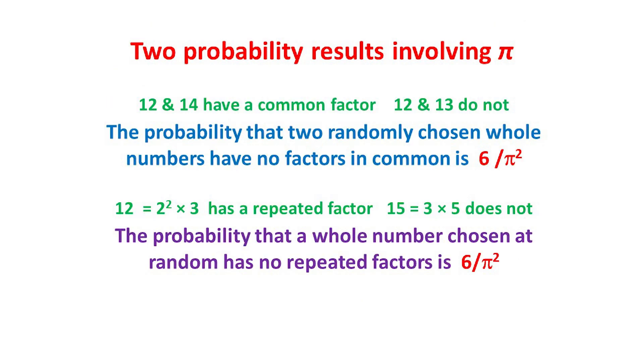Indeed, as we've already seen, the number pi turns up in unexpected places. Here are two from arithmetic. If we choose two whole numbers at random, they may or may not have a common factor. For example, 12 and 14 have the common factor 2, whereas 12 and 13 have no common factor other than 1. Amazingly, the chance that two whole numbers chosen at random have no factors in common is 6 over π², involving the circle number pi.